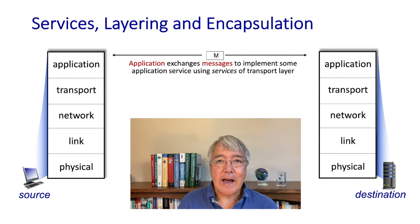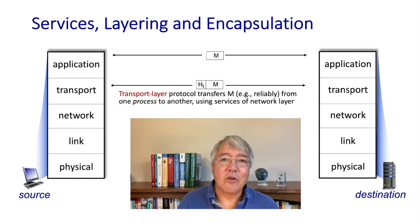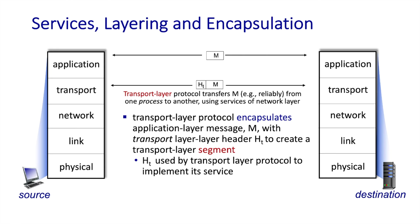We've talked many times about exchanging data — now it's time to be much more precise. At the application layer, the distributed pieces of the application exchange messages with each other, so the unit of data — the protocol data unit — at the application layer is known as a message. At the transport layer, the transport layer takes a message from the application layer and adds additional information to create a new protocol data unit known as a transport layer segment. The segment is the unit of data exchanged between entities at the transport layer.